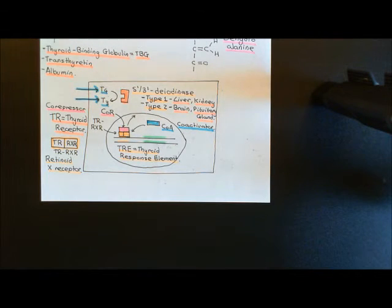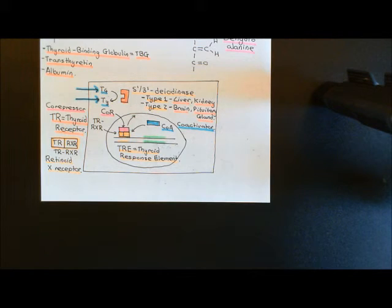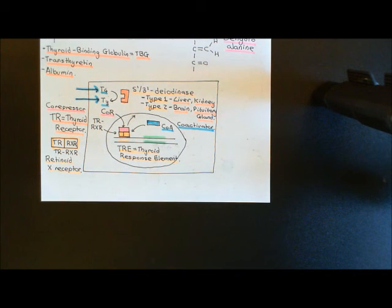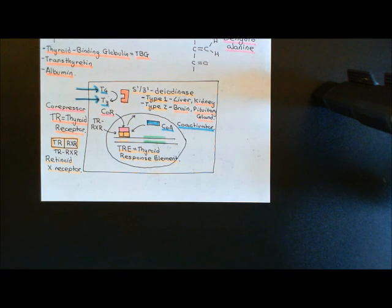That is the pathway by which T3 and T4 elicit changes in the behaviour of cells — they change gene expression within cells, and if you change gene expression you can hugely change the behaviour of the cell. So that's the detailed molecular biology; let's now zoom back out and talk on a more systems level about what are the effects of T3 and T4 around the body.